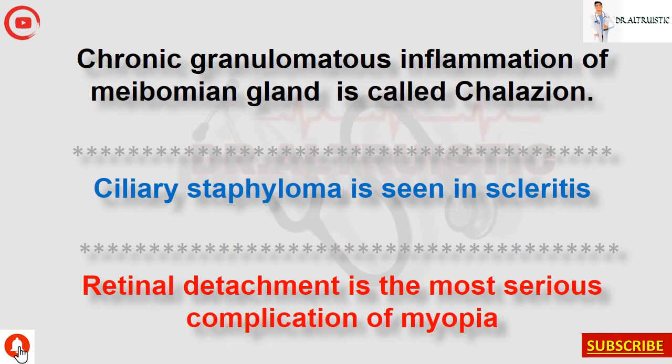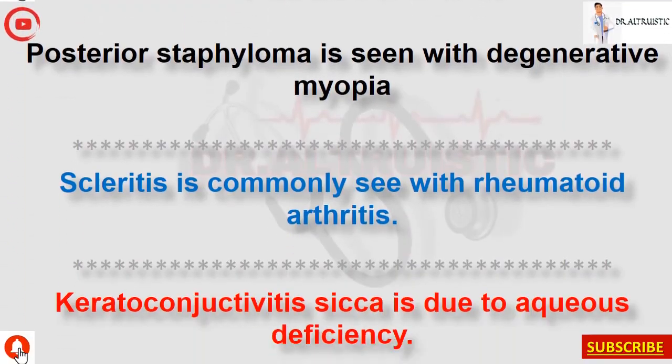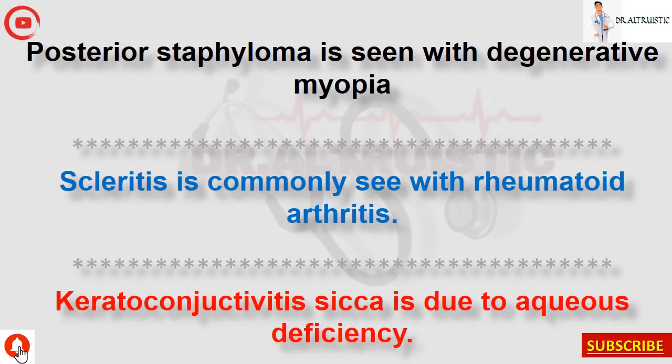Chronic granulomatous inflammation of the meibomian gland is called chalazion. Ciliary staphyloma is seen in scleritis. Retinal detachment is the most serious complication of myopia. Posterior staphyloma is seen with degenerative myopia. Scleritis is commonly seen with rheumatoid arthritis. Keratoconjunctivitis sicca is due to aqueous deficiency.